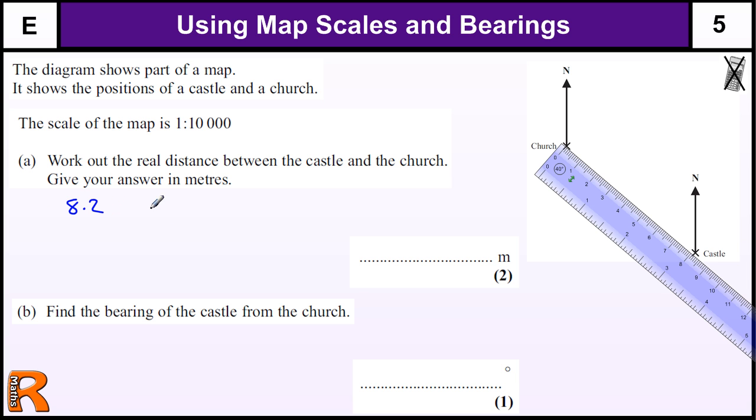But whatever measurement you take, to work out the real distance we need to multiply by 10,000. Now we're not allowed a calculator, so we've got to be very careful here. Now that's centimeters, if I multiply by 100, I'd have 820 centimeters. So that's times by 100, and I need to times by 10,000. The reason why I did that is 800 centimeters is 8 meters, so that's 8.2 meters.